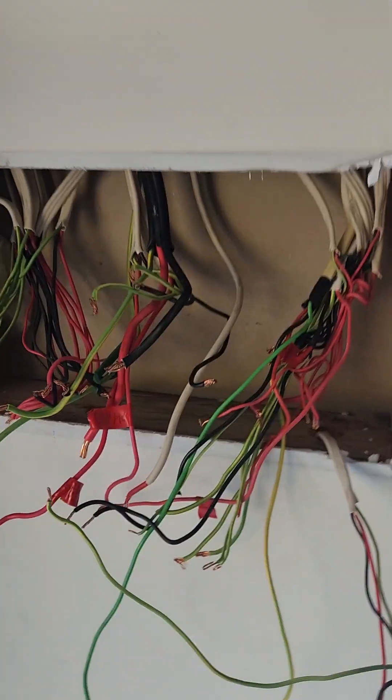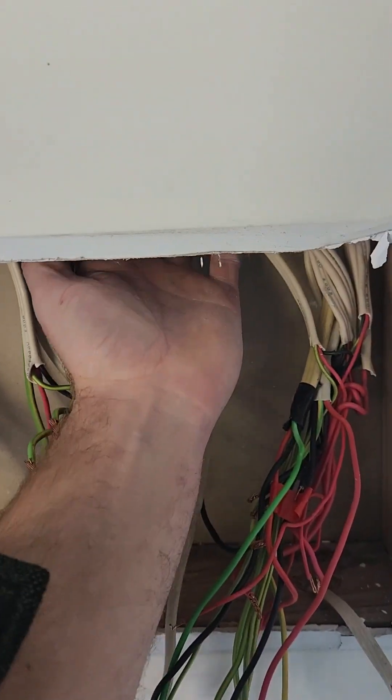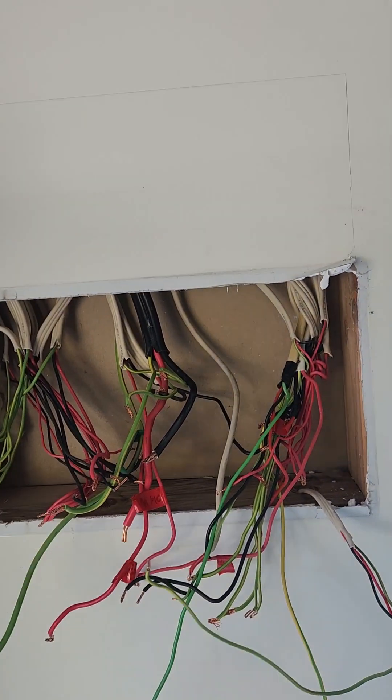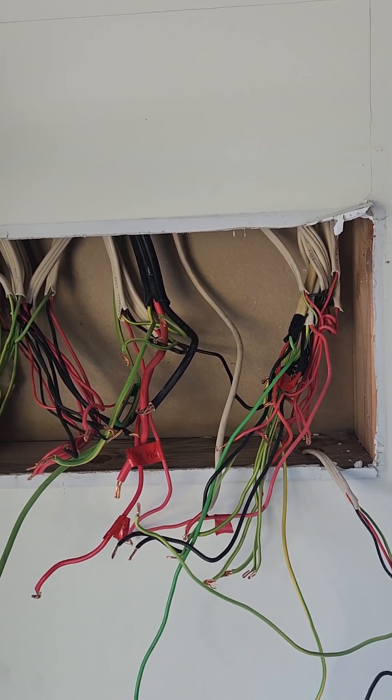So we've got the switchboard out, we've cleaned the hole out, we've got the bat out from up there. We'll cut this hole and then we'll feed our cables into the new switchboard and start fitting off the breakers.